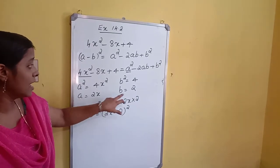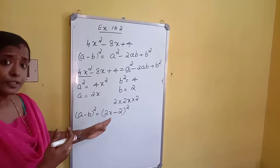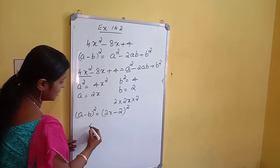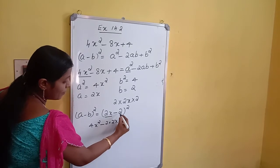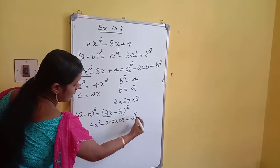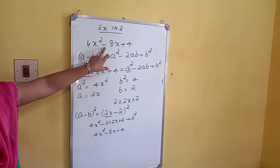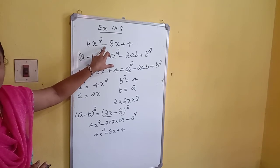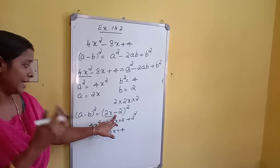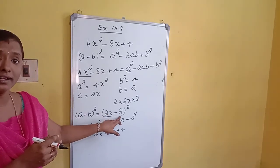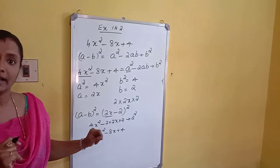A equals 2X and B equals 2, so 2X minus 2 whole square. Expanding to verify: A squared is 4X squared, minus 2 into 2X into 2 gives minus 8X, plus 2 squared gives plus 4. So 4X squared minus 8X plus 4, which matches our given algebraic expression. The required factorization is 2X minus 2 whole square. You can also simplify further since 2 is common, but this is sufficient.